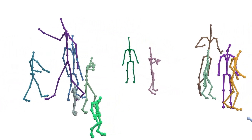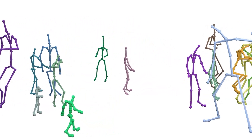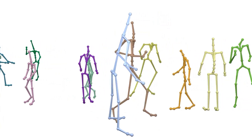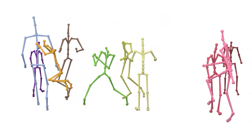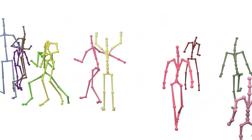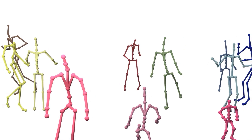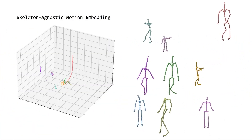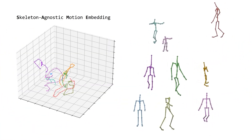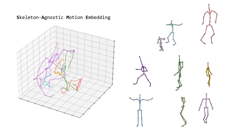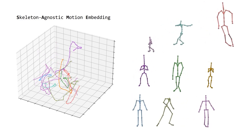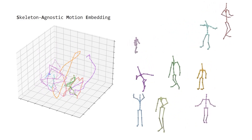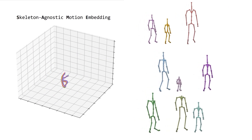Various motion datasets are often recorded with different skeletal structures such as size, body proportion, and topology of the character. Our goal is to build a framework that allows us to solve various animation tasks in a skeleton-agnostic manner. We propose skeleton-agnostic motion embedding, or SAME in short, which is an embedding space that disentangles skeleton-related information from motion while preserving semantics.